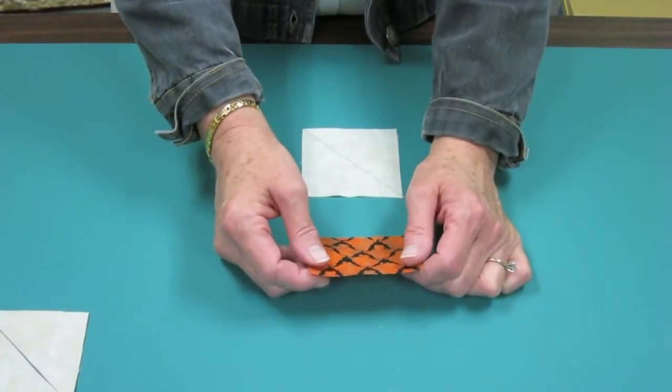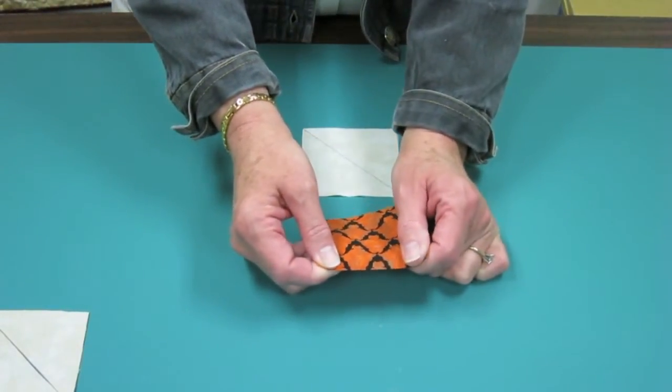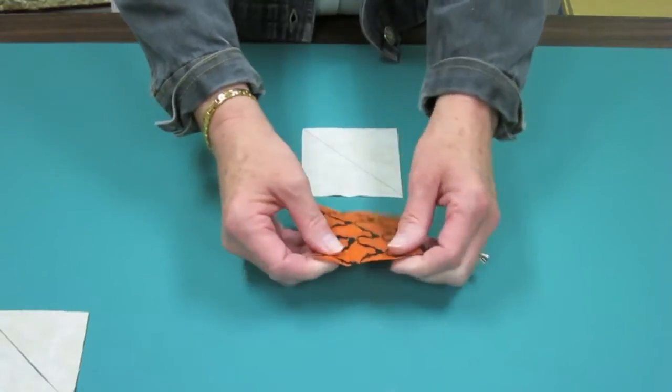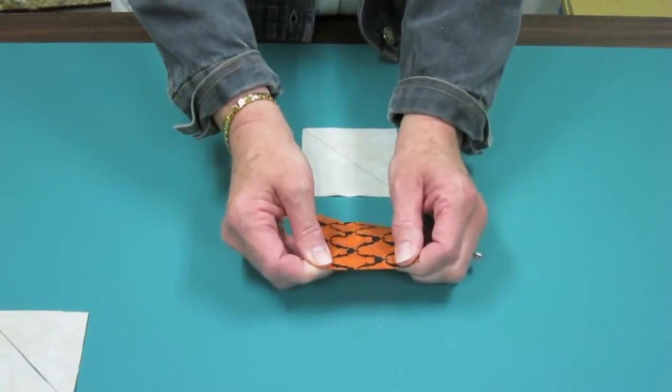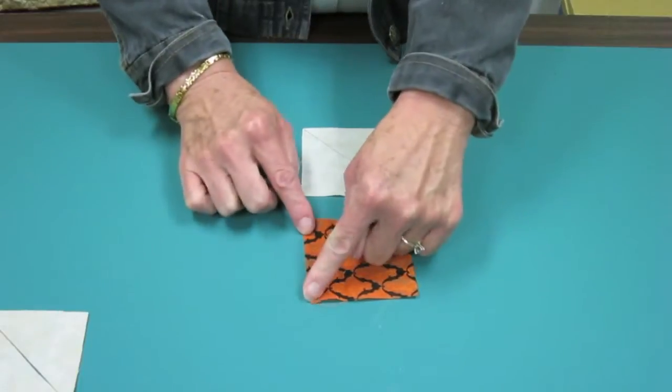So once you've cut, sometimes you don't know what that is, and all you have to do is give a pull test. If you notice here, I've got a little bit of give. Right here I don't have any give. Okay, this is lengthwise, this is crosswise.